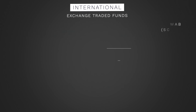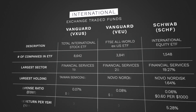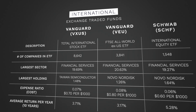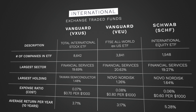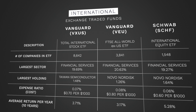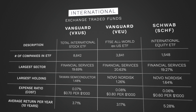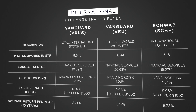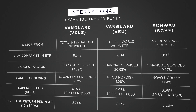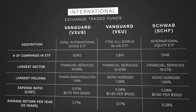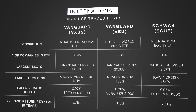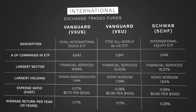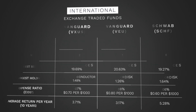A few examples of International ETFs are Vanguard's VXUS, Vanguard's VEU, and Schwab's International Equity ETF, SCHF. As a departure from U.S.-based stocks, we can see that these ETFs are focused primarily in the financial services sector.